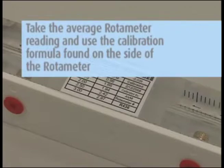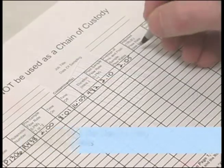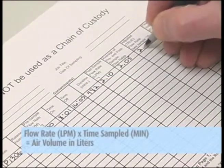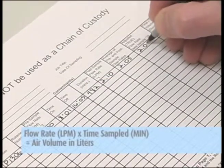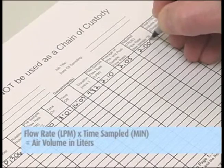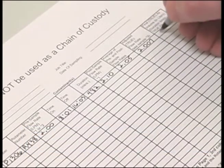Multiply the flow rate, LPM, by the total time sampled in minutes to get the air volume in liters. Record the total liters on the field pump data sheets and the chain of custody.